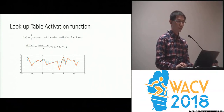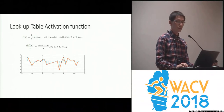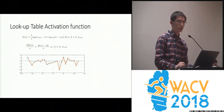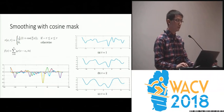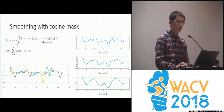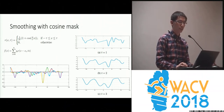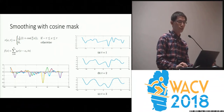One shortcoming of this linear interpolation is that it's not smooth enough. The gradient over the input is determined by the difference between the two adjacent points, so any local fluctuation of the function will lead to an inconsistent gradient. To overcome this problem, we smooth the function with a smoothing mask. We multiply each point with one period of a cosine function, and the final function is generated by adding all of them together. By controlling the period of the cosine mask, we can tune the level of smoothness of the activation function.